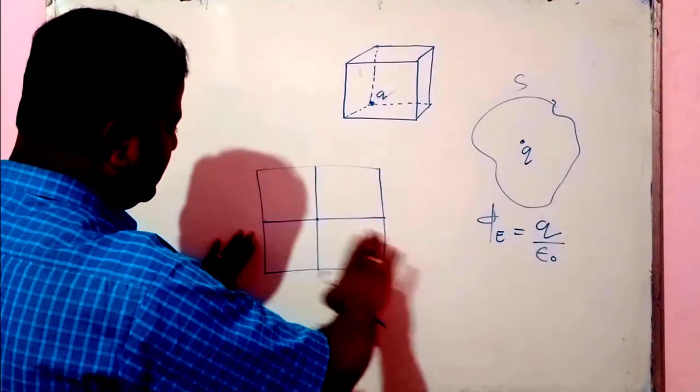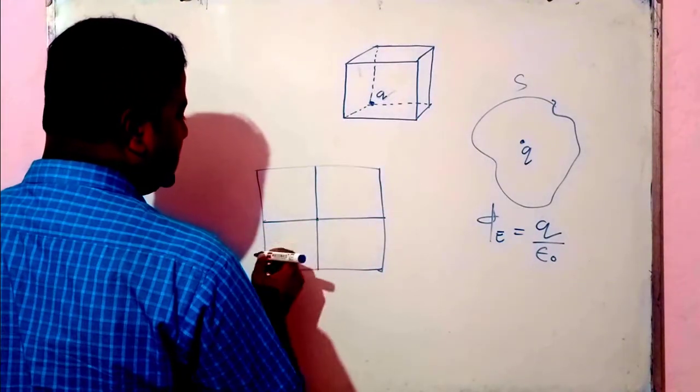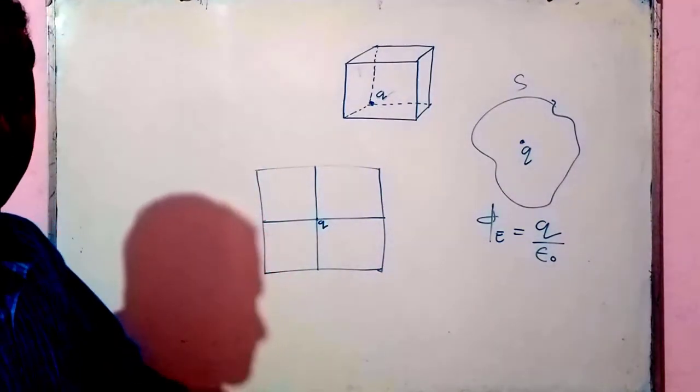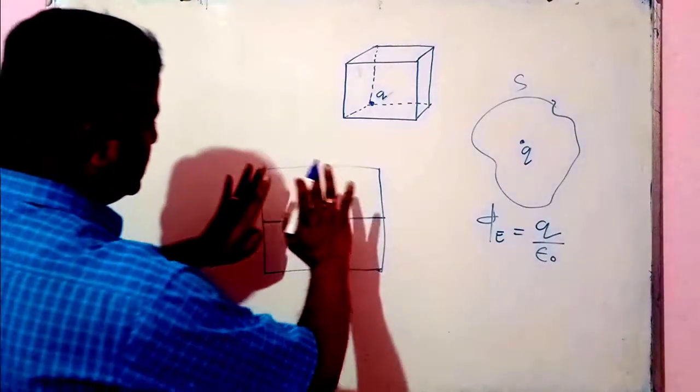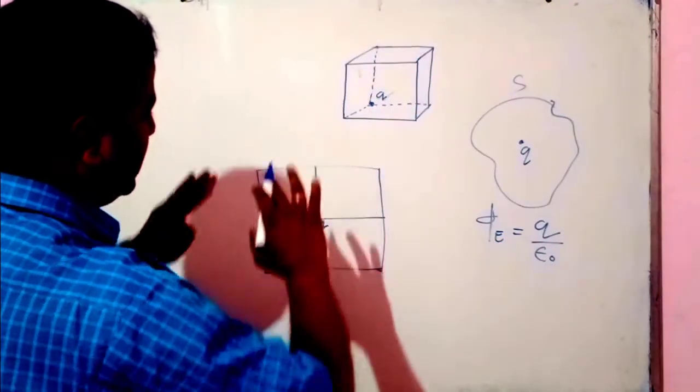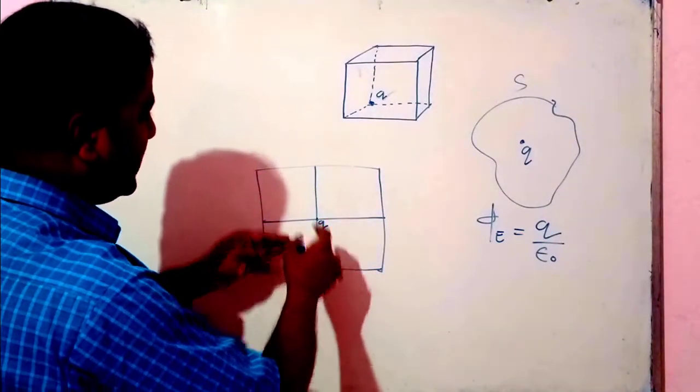We place here four cubes. Now, we place the charge q here. Again, we place similar four cubes on it. Then, this charge will be enclosed by a big cube, and this big cube consists of eight cubes.